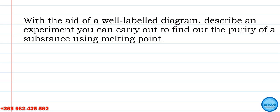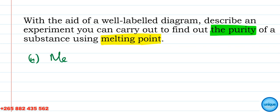In this video we want to see how we can answer this chemistry problem. The question leads with a labelled diagram: describe an experiment you can carry out to find out the purity of a substance using a melting point. Before answering, we can also be asked to state or give ways of determining the purity of a substance — one of which is using a melting point.